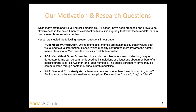Secondly, we're interested in what we call visual-text slur grounding, which is a rather unique occurrence in a social task like hate speech detection. In hate speech detection, we have unique derogatory terms that can commonly be used as insinuation or allegation about members of a specific group. Two such terms are 'dishwasher' and 'goatfucker': 'dishwasher' is used to discriminate against women, implying they should be housewives, while 'goatfucker' targets the Muslim community with harmful and false insinuations. These derogatory terms can be communicated through contextual cues across the two modalities.